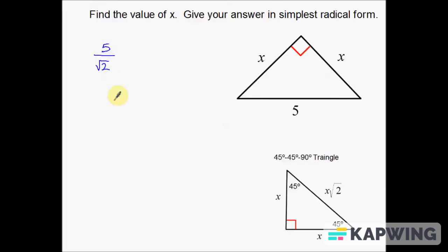So what we have to do in this case is, to get rid of this radical on the bottom, to get rid of that square root of 2 on the bottom, what we're actually going to do is multiply by the square root of 2 on top and on bottom.